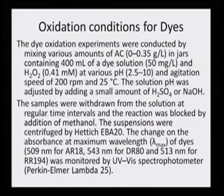The lambda max values of these dyes were the main indicator to monitor, as a lowering of lambda max is the criterion for evaluating any dye by UV-visible spectroscopy. AR18 had a lambda max of 509 nm, DR80 had a lambda max of 543 nm, and RR194 had a lambda max of 513 nm. Since they were all different, they were easy to monitor independently.